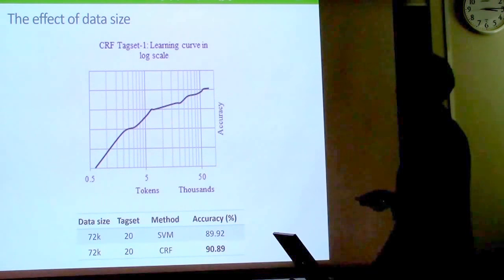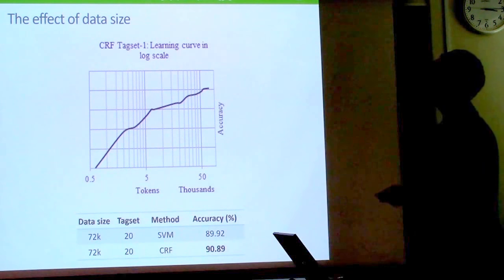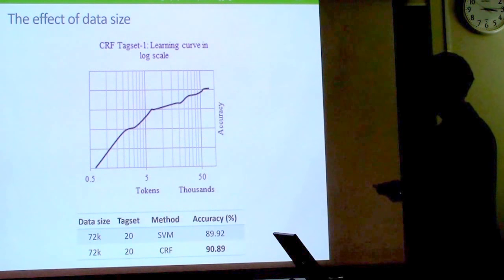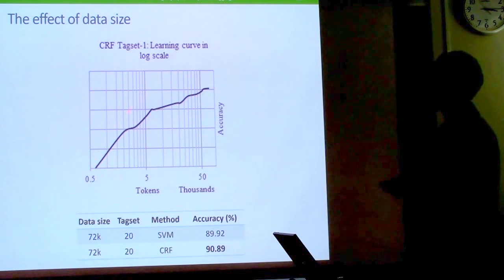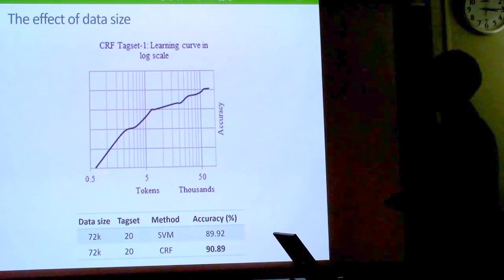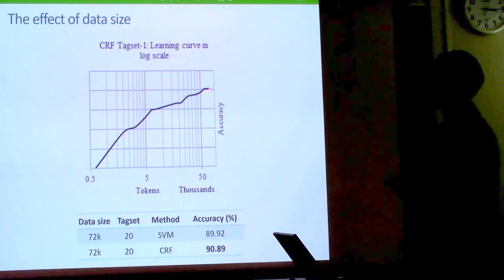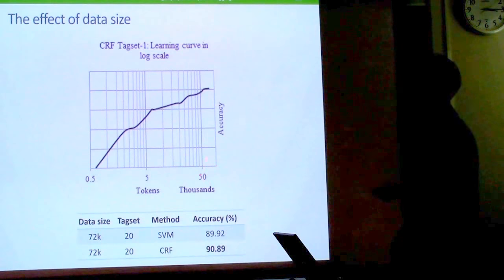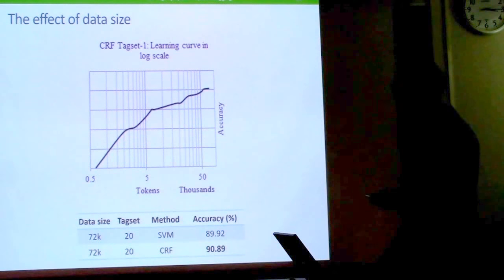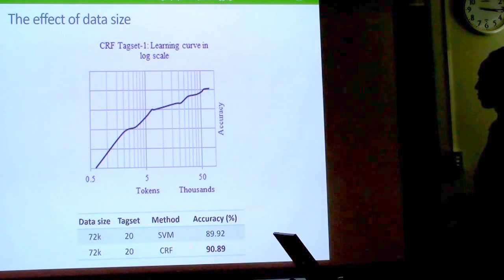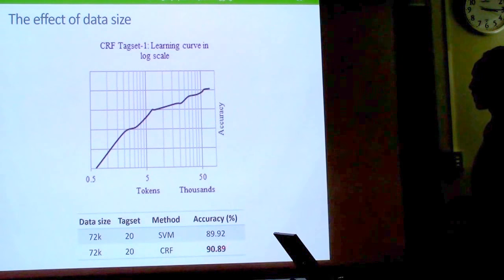Our data is small, so we examined a learning curve showing that as data size increases, performance improves. We can expect further gains with more data. The maximum result achieved from this manual feature engineering approach was about 90.89%.